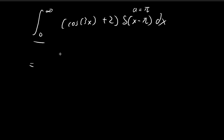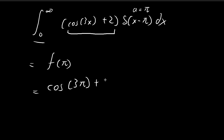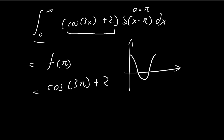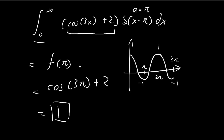This integral equals f(π), where f(x) = cos(3x) + 2, so it becomes cos(3π) + 2. Looking at the cosine graph, cos(3π) = -1, so the result is 2 - 1 = 1. That is the value of the second integral.